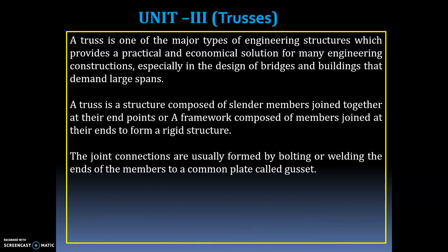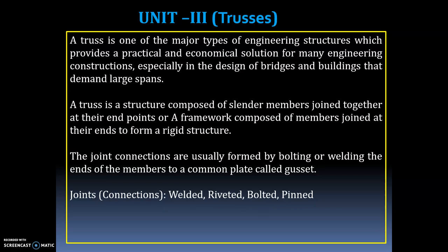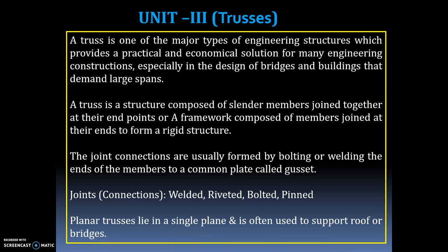The joint connections are usually formed by bolting or welding the ends of the members to a common plate called a gusset plate. Joints may be welded joints, rivet joints, bolted joints, or pin joints.